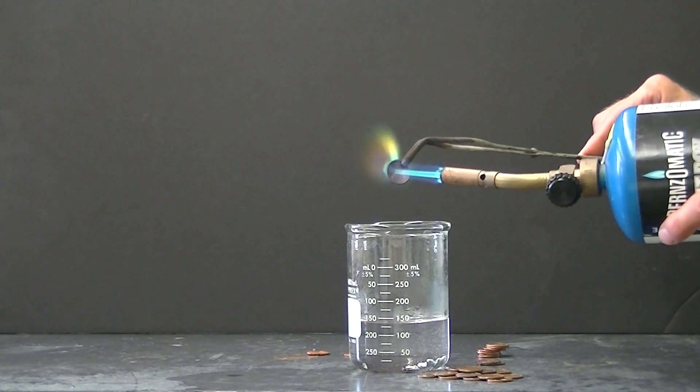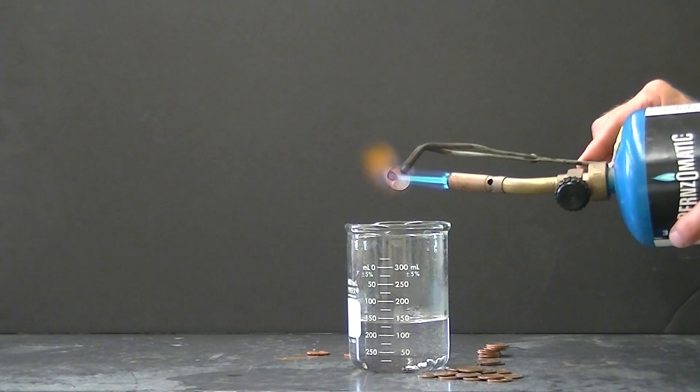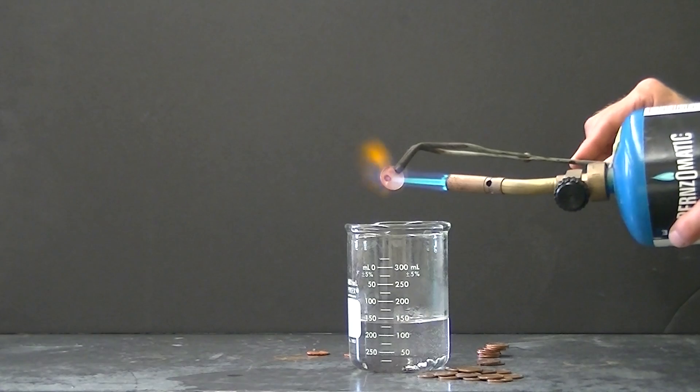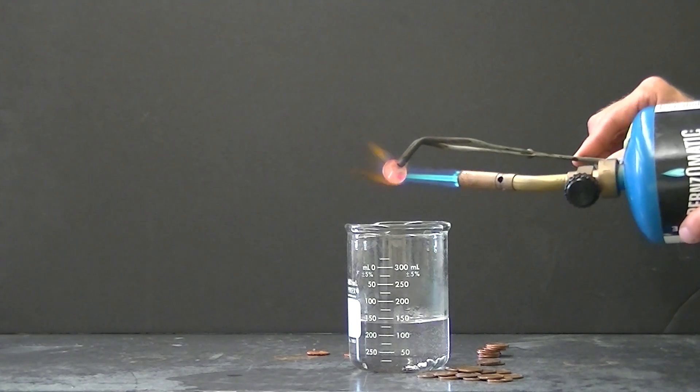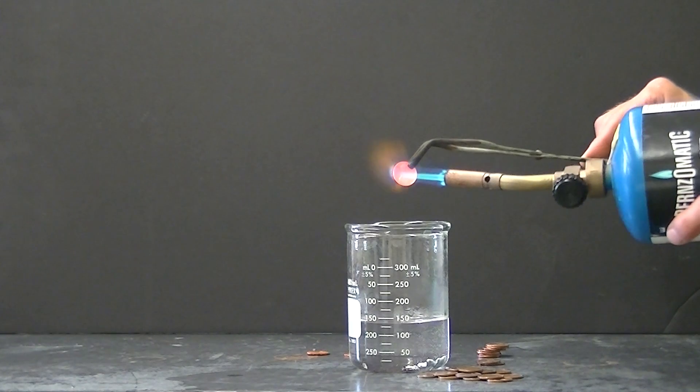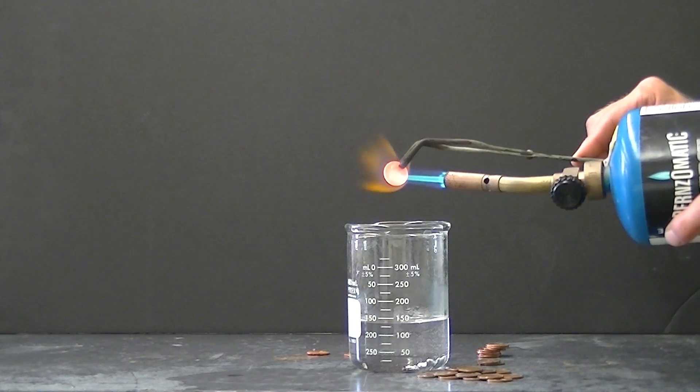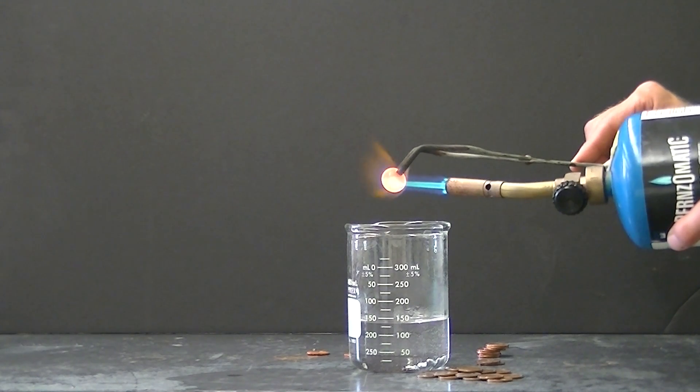Because copper melts at 1,085 Celsius. And it's really difficult to heat this penny to 1,085 with the flame of this blowtorch. But you do get it hot enough to glow an orange yellow color. Right now it's about a little bit of orange red. Going to orange you continue to heat. And it gets to that nice orange yellow color. That's just pretty.